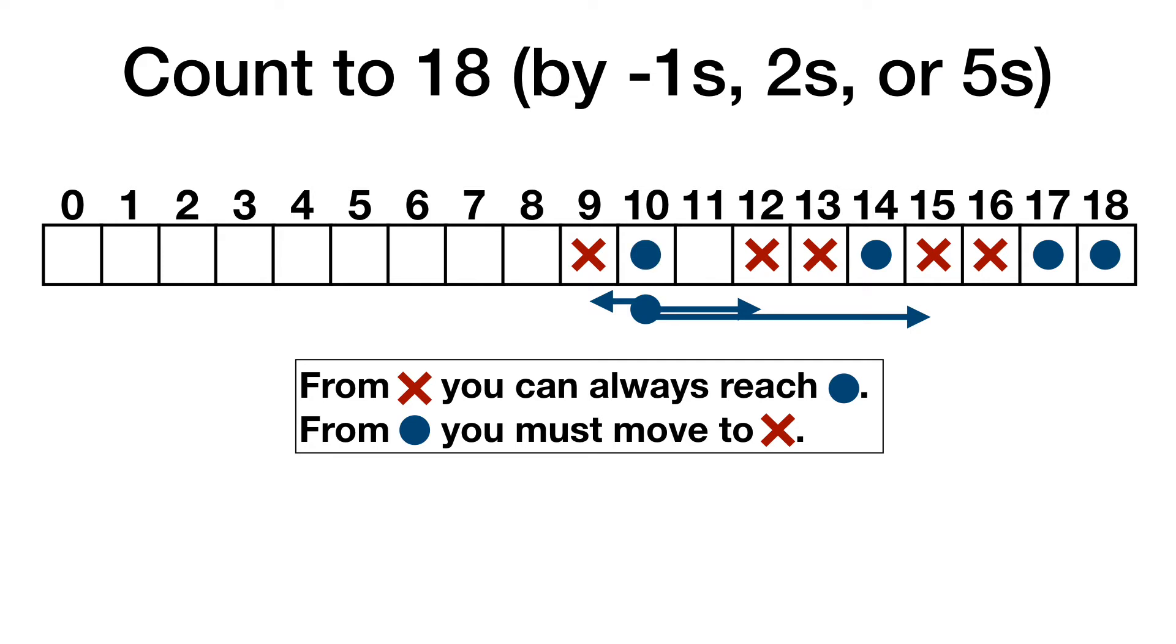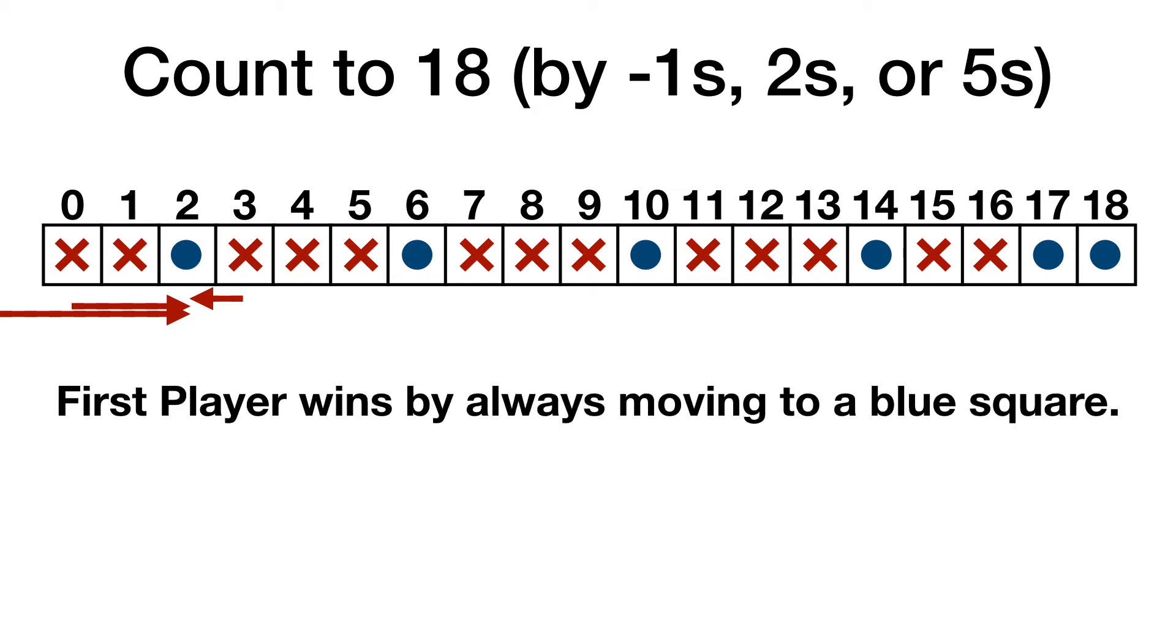From 10, we can only reach Xs. 5, 8, and 11 are squares where we can reach a dot. 6 gets a dot because it can only reach an X. 1, 4, and 7 get Xs because they can all reach 6. From 2, we can only get to Xs, so 2 gets a dot. And finally, we can reach a dot from both 0 and 3, so they get Xs. Yet again, it looks like the first player can always win this variation of count to 18 by always counting to a square with a blue dot.